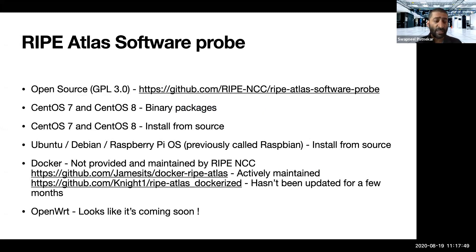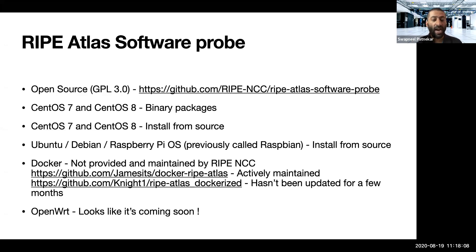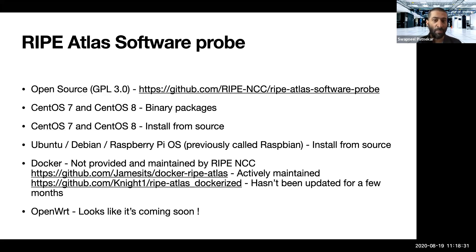Moving on, in the case of Docker, the RIPE NCC does not provide and maintain these Docker images. These are maintained by volunteers, like RIPE Atlas ambassadors. The source for the Docker images is available on GitHub. I will demonstrate the first link, which is by James, because that is the one which is being actively maintained, and the other one hasn't been updated for a pretty long time.